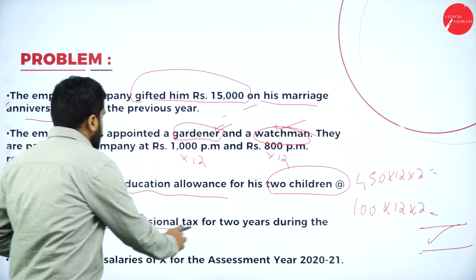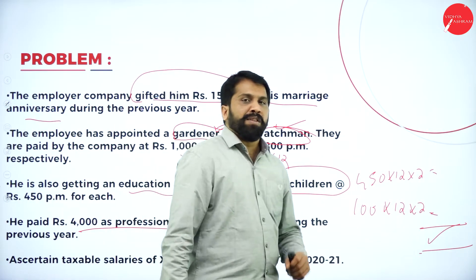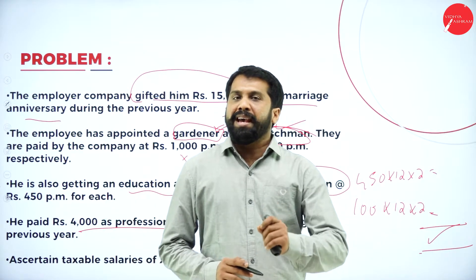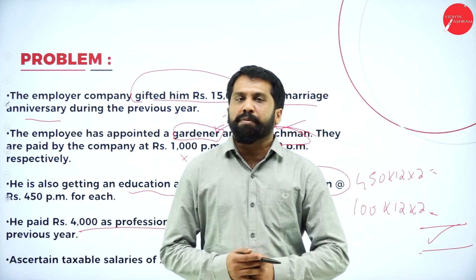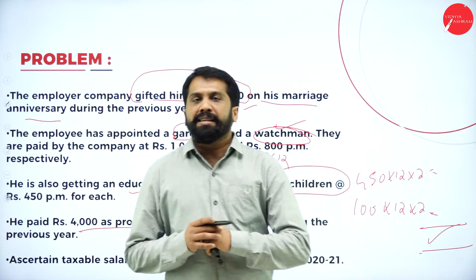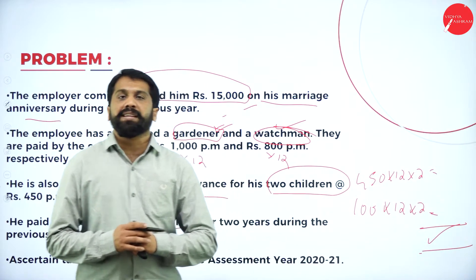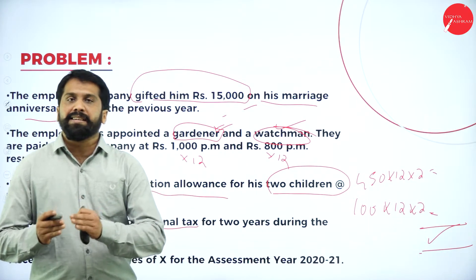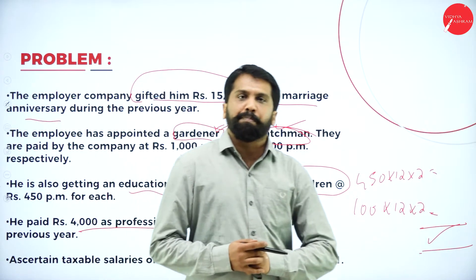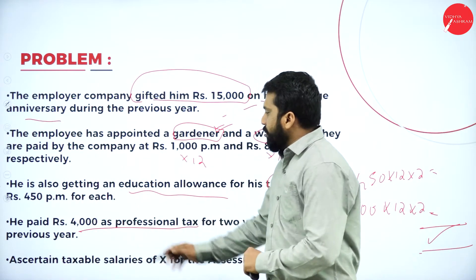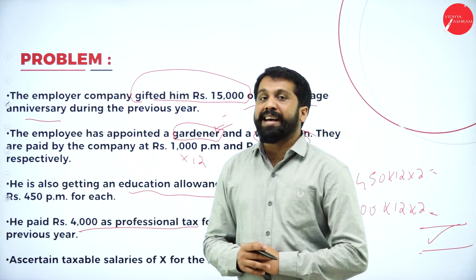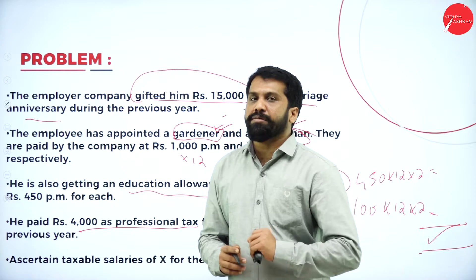He paid 4,000 as professional tax. Any employment tax or professional tax is included as taxable, but whatever you paid has to be deducted at the end. So you have a deduction for the tax paid, and at the end you minus this 4,000 to reduce your tax liability.